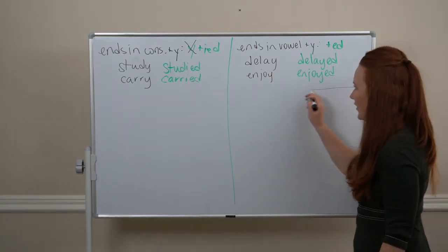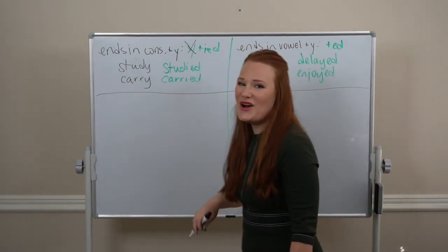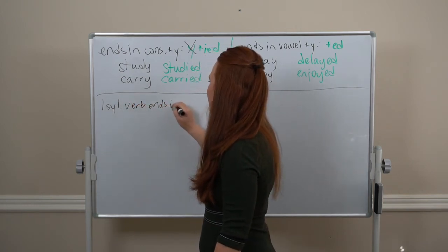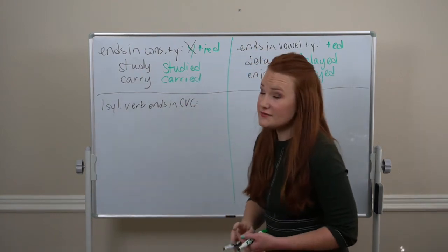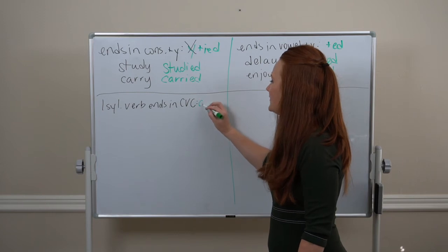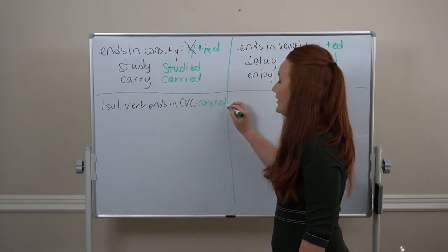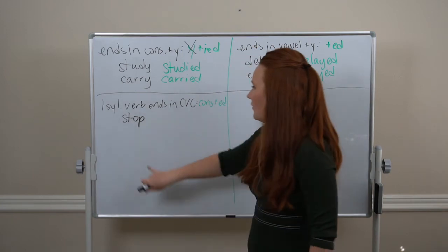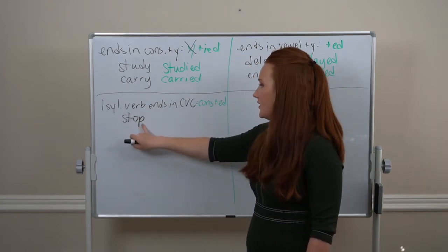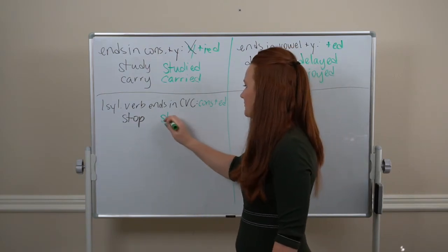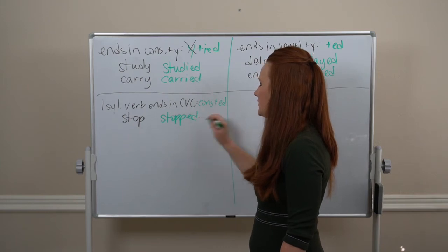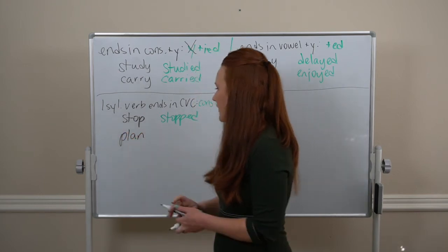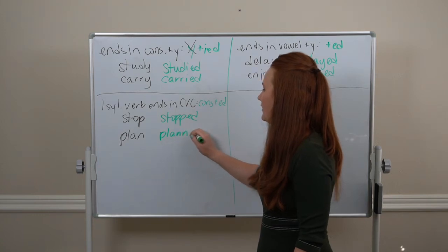Now, let's talk CVC. With a one-syllable verb that ends in CVC, we will double the consonant and add ED. So, a verb like stop. We have consonant, vowel, consonant at the end. So, that last consonant, we'll do two times. Stopped. Or with plan. We've got CVC at the end. So, we'll double that N. Planned.